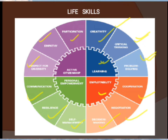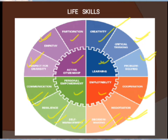For employability, that is cooperation, negotiation, and decision making. From personal empowerment, that is self-management, resilience — which means flexibility — and communication. From active citizenship, that is respect for diversity, empathy, and participation. These are the four main areas of life skills: learning, employability, personal empowerment, and active citizenship.